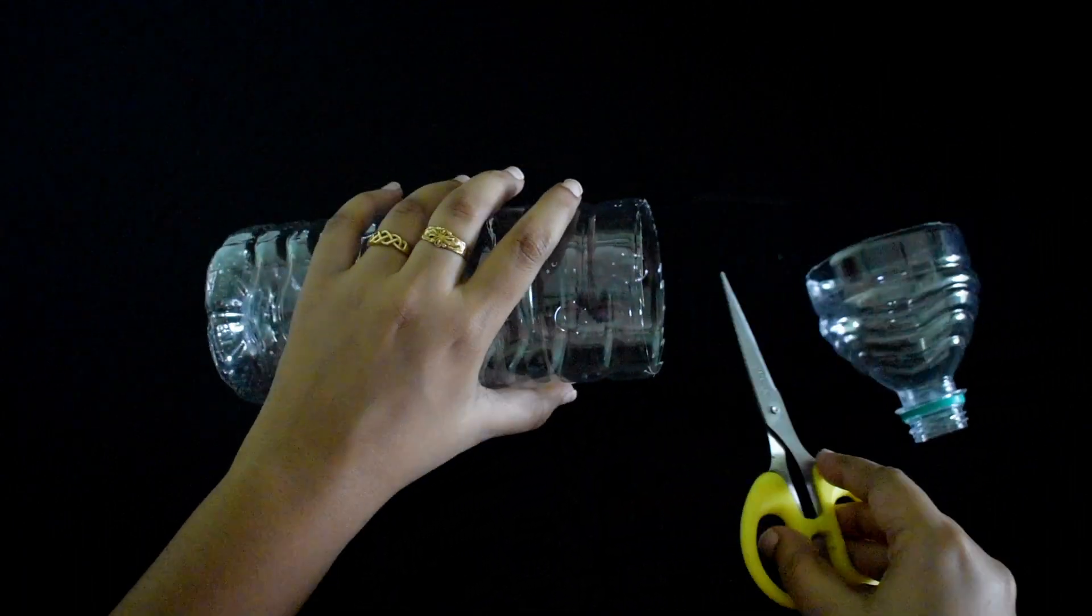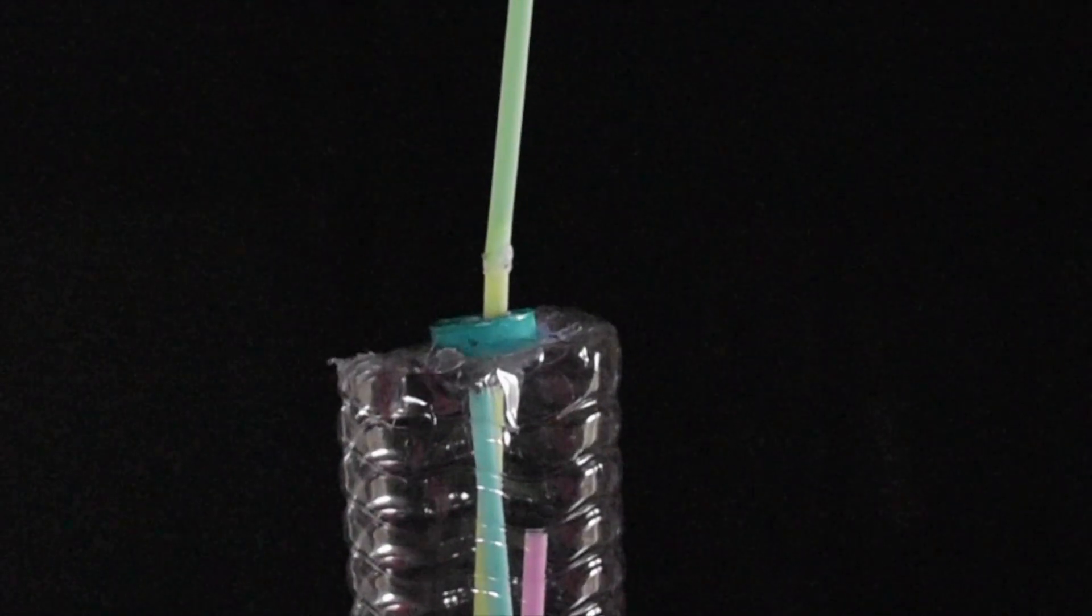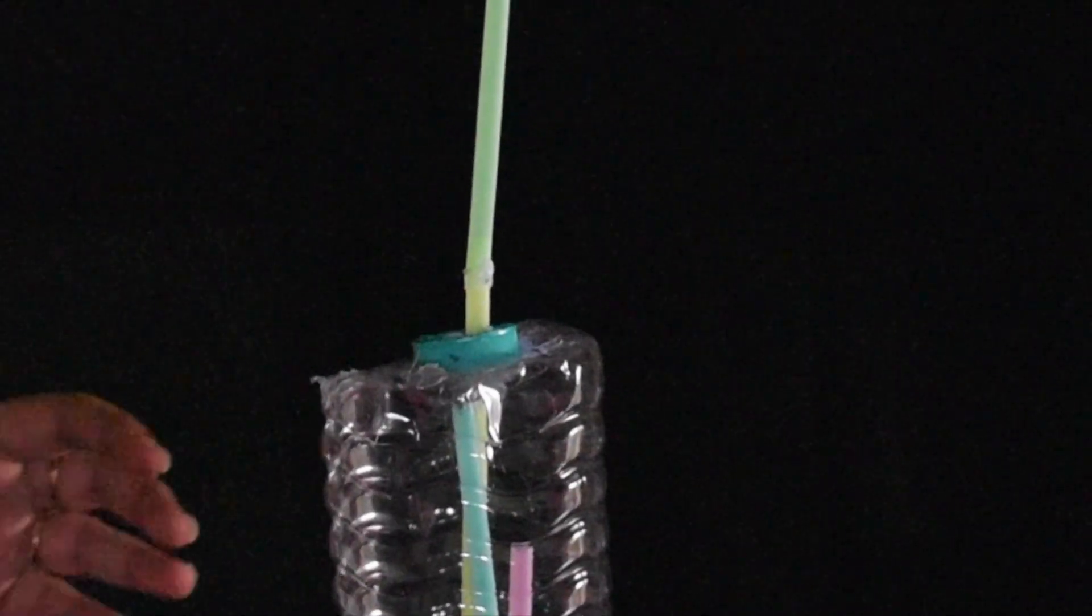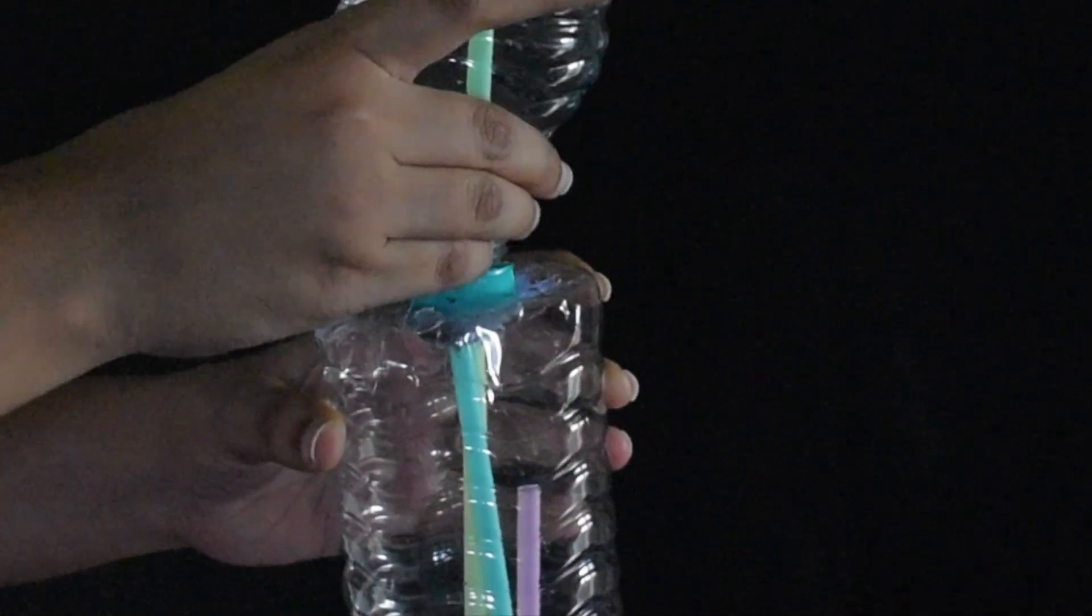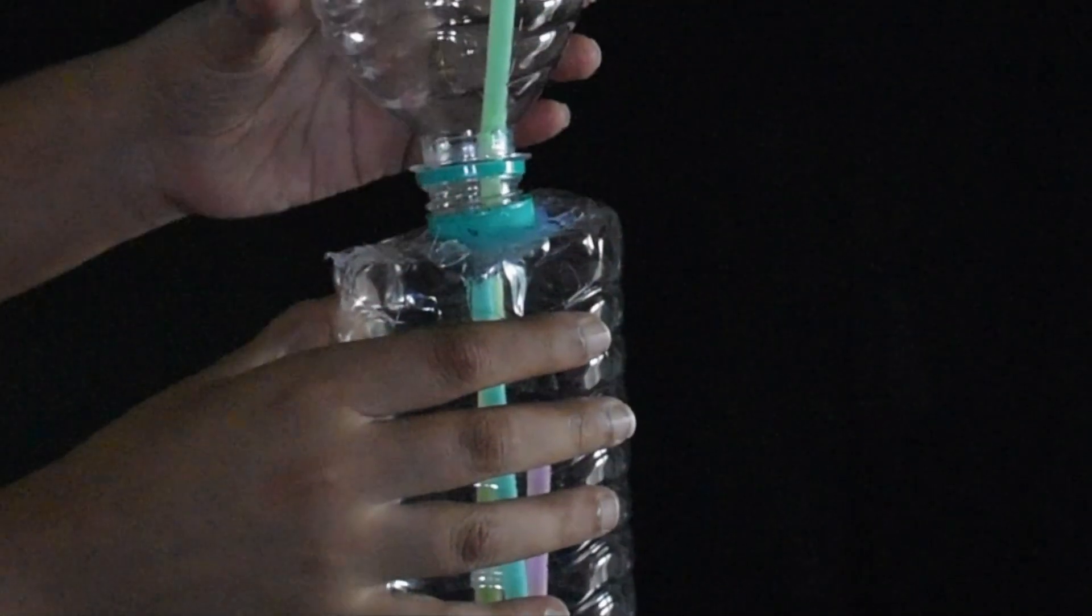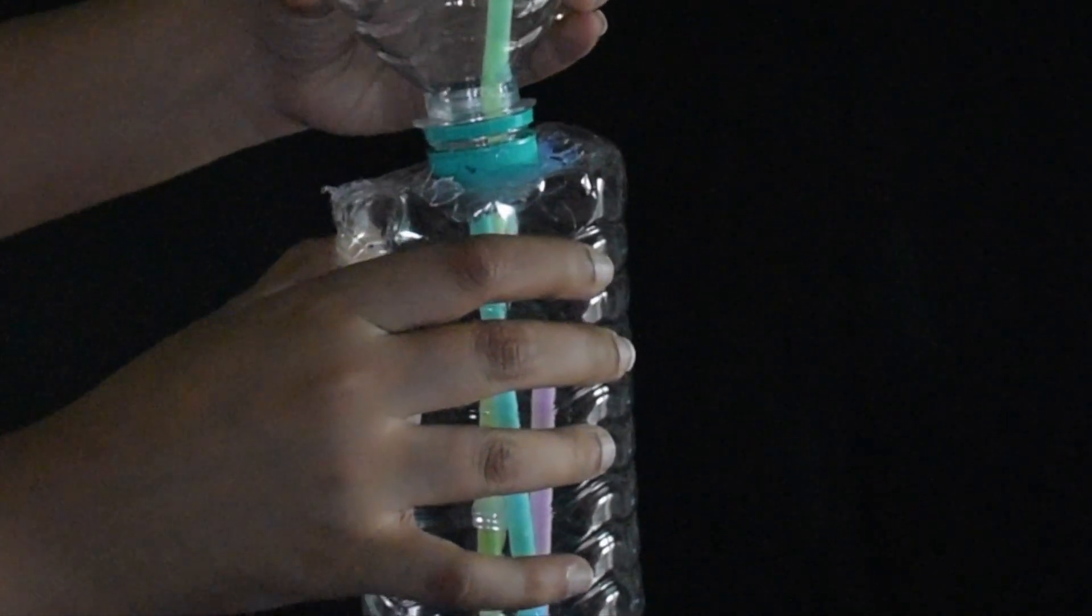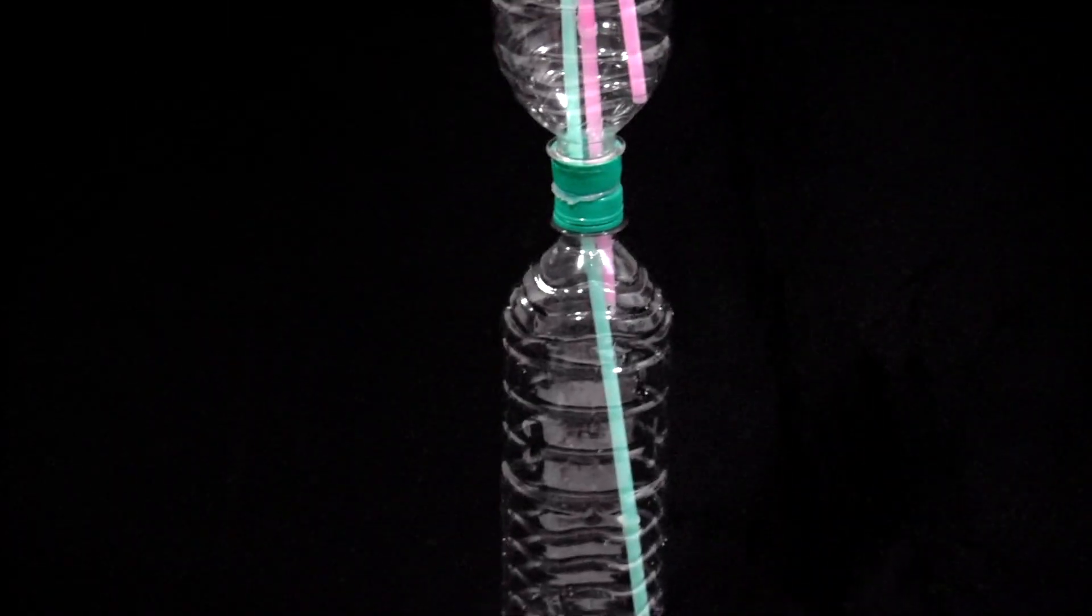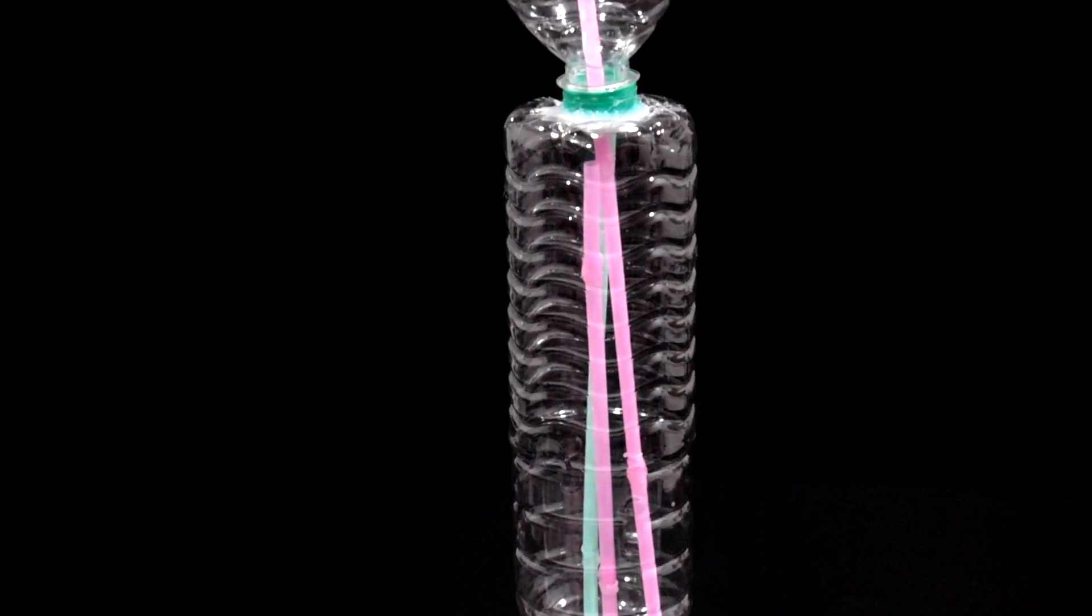Finally we need to cut the top section of the third bottle to make a funnel. Screw this down onto the top. And that's our fountain complete.